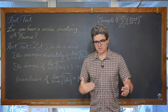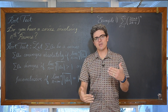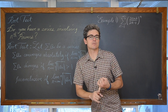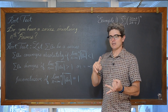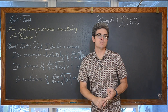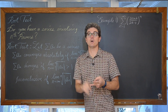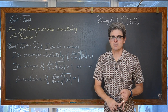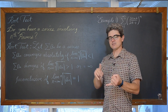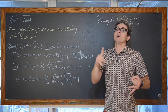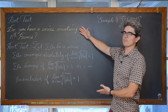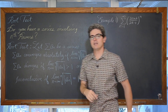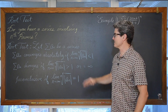We have been looking at series and determining whether they converge or diverge, recognizing that they are geometric series, telescoping series. We have done the p-series test, the integral test, the alternating series test, the limit comparison test, the direct comparison test, the ratio test, and now we have here the root test. It says: